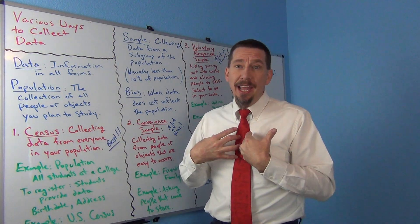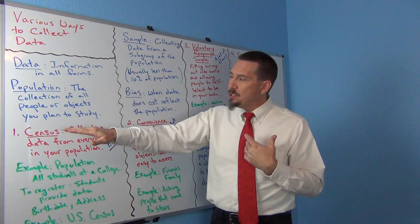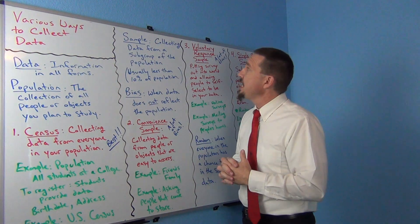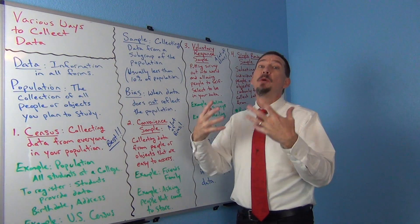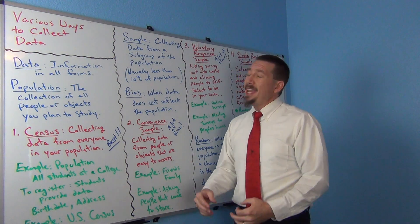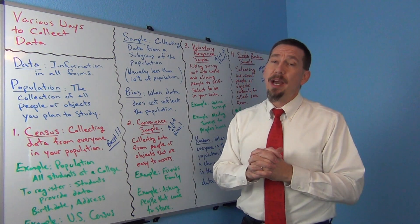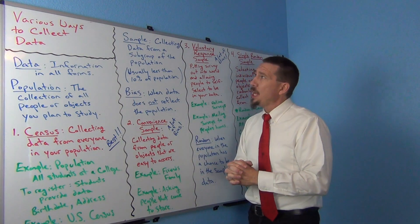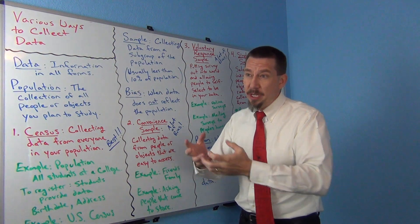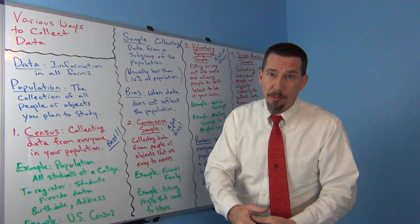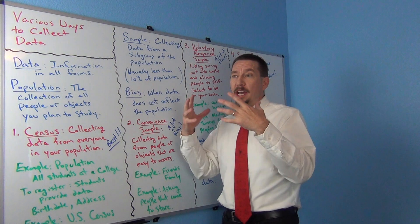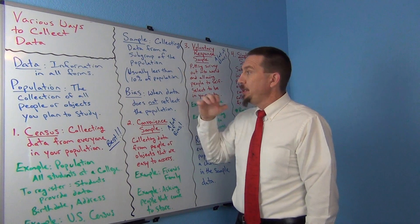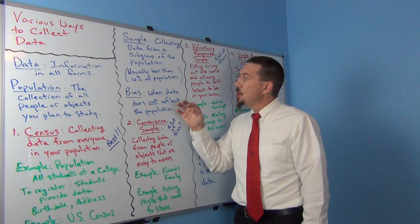So what you have to rely on is something called a sample. If you can't do a census, you resort to a sample. A sample means you're collecting data from a small subgroup of the population — usually quite a bit smaller than the population. Samples are often less than 10 percent of the population, and could be much less: maybe 300 people, 50 people, or 200 people.